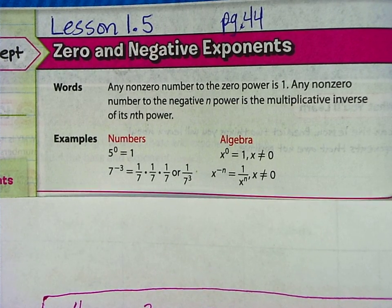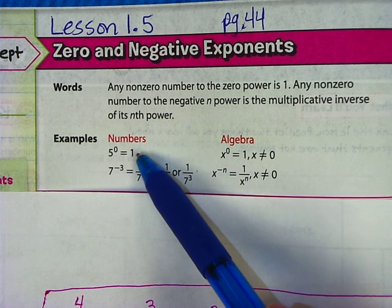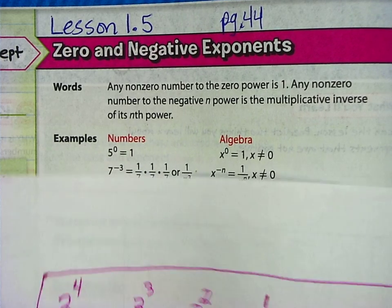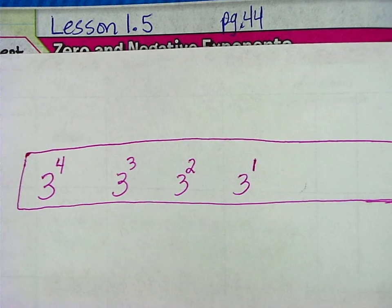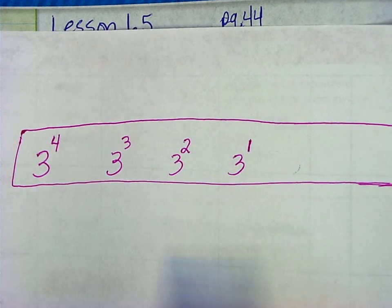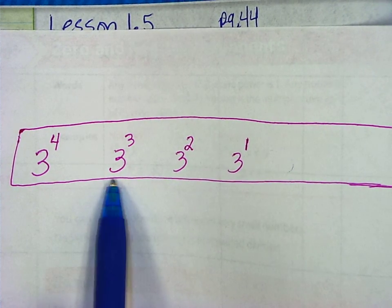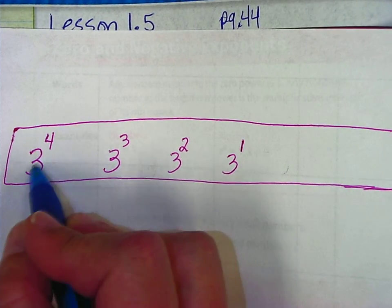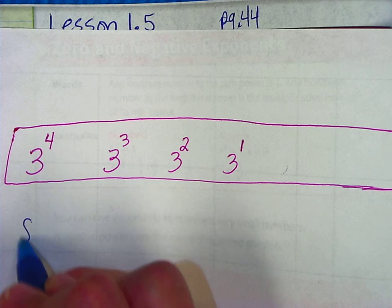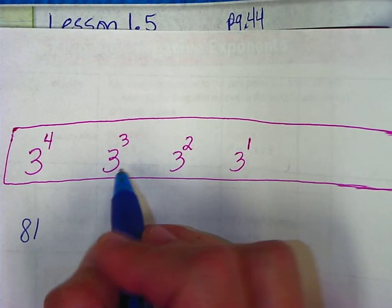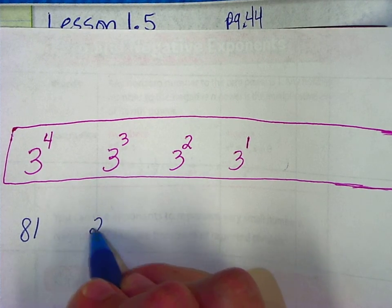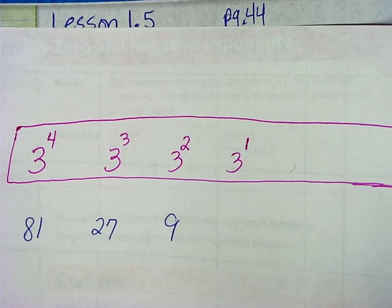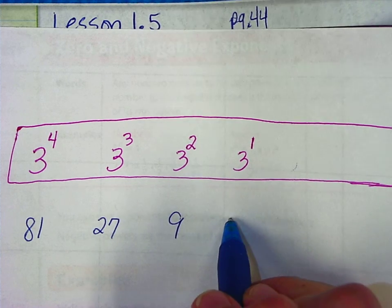Let's take a look at why anything to the zero power is 1 and why you get fractions with negative exponents. Let's take some powers of 3. We have 3 to the fourth, 3 cubed, 3 squared, and 3 to the first. 3 to the fourth is 81, 3 cubed is 27, 3 squared is 9, and 3 to the first power is 3.